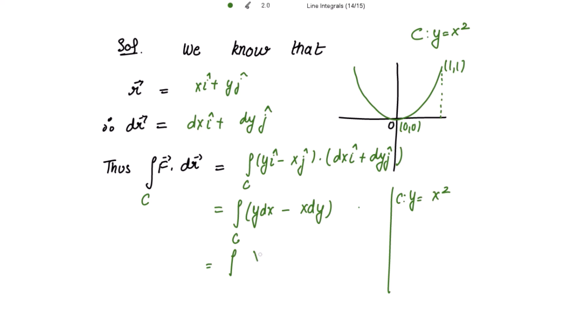So it is x square dx minus x times dy. Take the derivative on both sides: dy equal to 2x dx. Writing here 2x dx, and now you don't have to write C, just write the limits of x that is from 0 to 1.